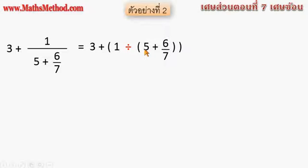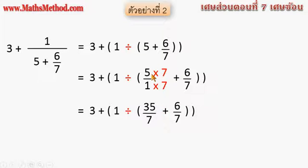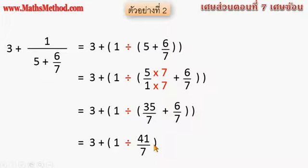We will use 5 to make it 7, because it will be 7. 5 is perfect, giving 15, then 1 and 7 using the same method. 35 plus 6 is 41, so the answer is 41.